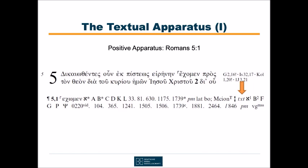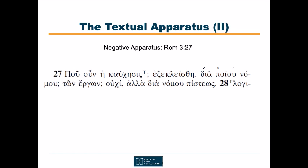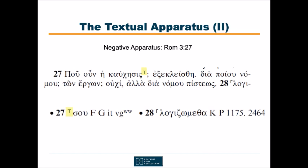We will have a closer look at this apparatus unit in a minute, but let's first examine a negative apparatus. I have chosen a very simple example. In Romans 3 verse 27, Paul asks, 'Pou hē kauchēsis?' — what becomes now of the boasting? The critical sign used here slightly differs from that in Romans 5:1 and indicates an insertion after the final word kauchēsis. There is a negative apparatus for this insertion, which says that some manuscripts add the pronoun su after kauchēsis — 'What becomes now of your boasting?' Two uncials and part of the Latin tradition support this reading. No evidence is given for the reading in the text, that means for the reading without the addition. In cases like this, we are speaking of a negative apparatus.